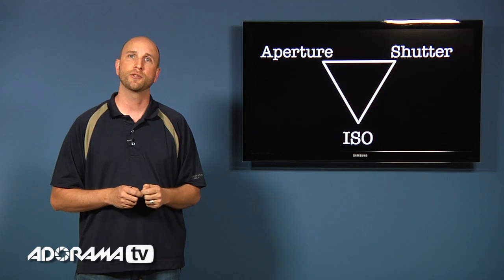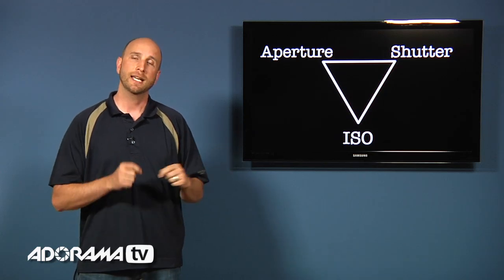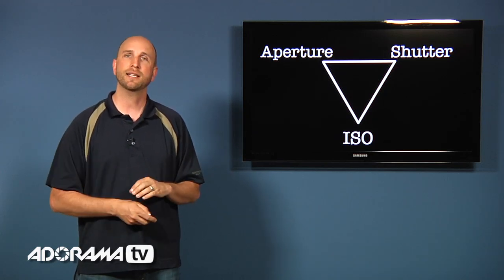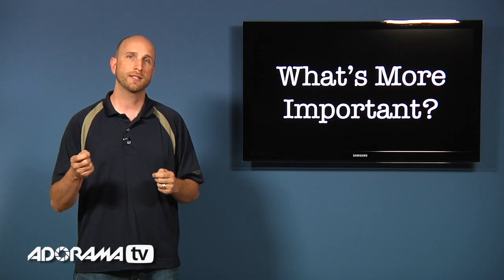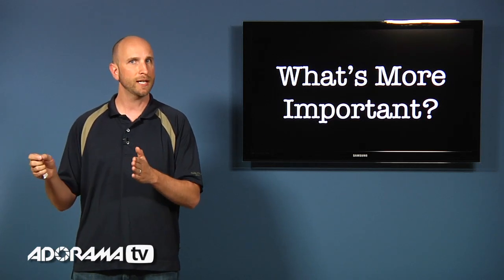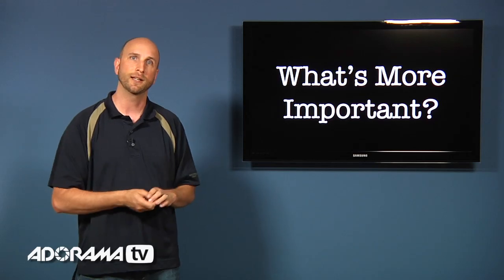Well now that shows us that we have three things that work together to control exposure. Aperture, shutter and ISO. Now you might be asking yourself what's more important to set your camera's shutter speed to a certain setting or your camera's aperture value to a certain setting.